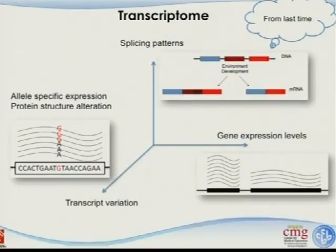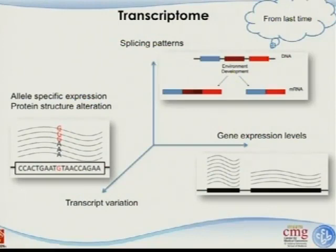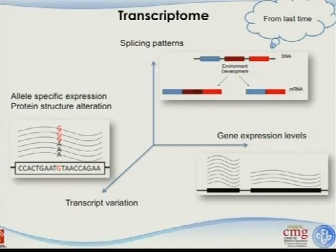Traditionally, when we talk about transcriptome analysis, gene expression is the first thing that comes to mind — which genes are expressed and by how much. But RNA sequencing allows us to go to the transcriptome in higher dimensions. The second dimension is splicing patterns: one gene with three exons can have all three in the final product in one condition, or only the middle one skipped in another. The third dimension is variation on the transcript — single nucleotide variation can affect protein structure.